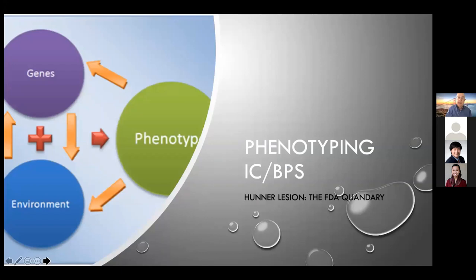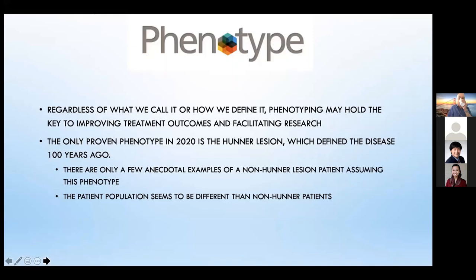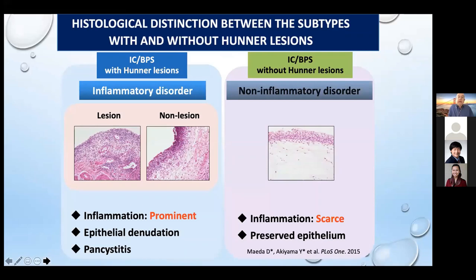Phenotyping IC/BPS is a major area of controversy at the present time. Regardless of what we call it or how we define it, phenotyping may hold the key to improving treatment outcomes and facilitating research in bladder pain syndrome. The only proven phenotype in 2020 is the Hunter lesion, which is what defined this disease a hundred years ago. There are only a few anecdotal examples of a non-Hunter lesion patient assuming the Hunter lesion phenotype. Hunter lesion is an inflammatory disorder — inflammation is prominent, with epithelial denudation and a pan-cystitis. Non-Hunter lesion BPS may have mild chronic inflammation on biopsy.